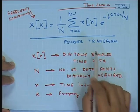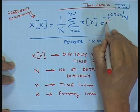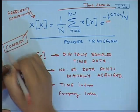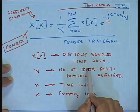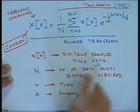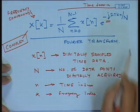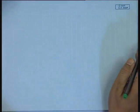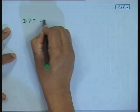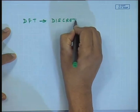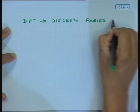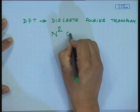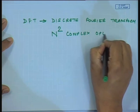These operations involve complex numbers — both the time domain data and frequency components are complex numbers. A real-world time domain data will have complex Fourier or frequency domain components, and this computation is complex. If you look at the number of operations in this DFT — Discrete Fourier Transform — there are N² complex operations.